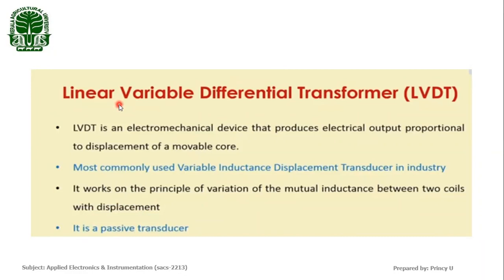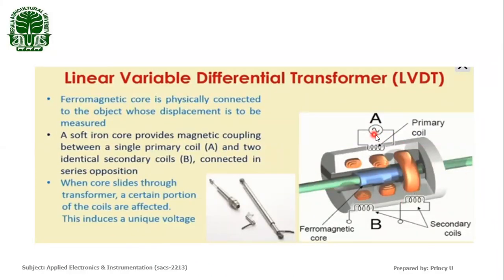The word 'linear' means the output is linear, and it is a variable differential transformer type. Constructionally, a transformer has a primary winding and a secondary winding. Here also there are primary and secondary windings — one primary coil and two secondary coils. The secondary coils are connected in series opposition, meaning the magnetic field produced by the first secondary coil is in a direction opposite to the magnetic field produced by the second secondary coil.